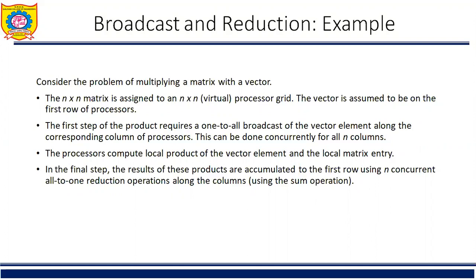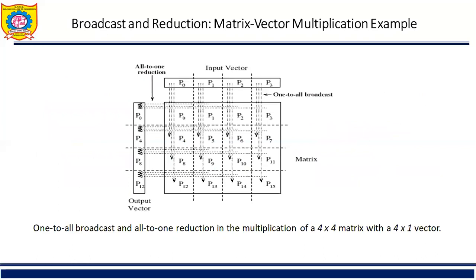This example is shown in this figure of matrix vector multiplication. This figure shows a possible mapping of the matrix and vector in which each element of the matrix belongs to a different process. The vector is distributed among the processes in the topmost row of the mesh, and the result vector is generated on the leftmost column of processes.